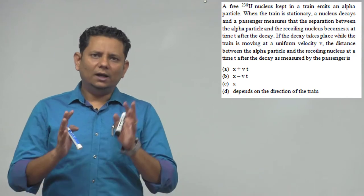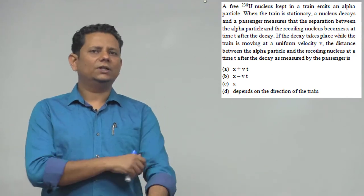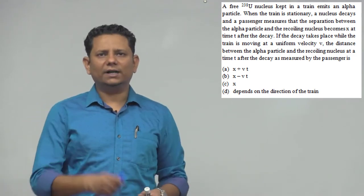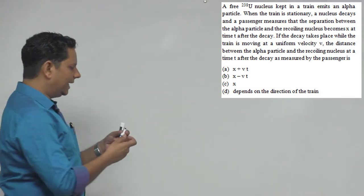This is because in the initial frame the train is at rest, in the other case the train is at uniform velocity, so X would be the right answer.